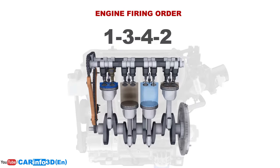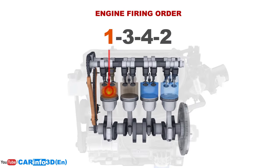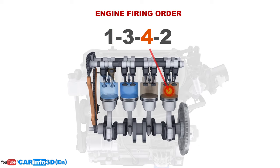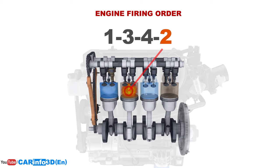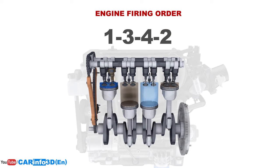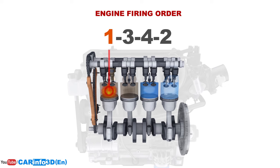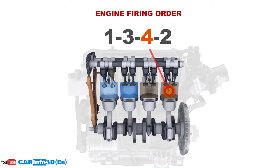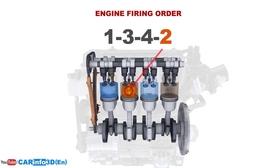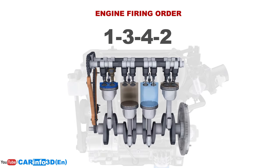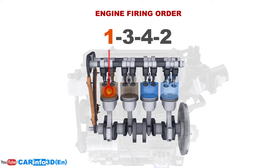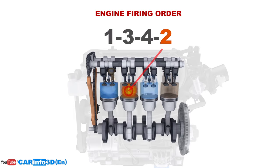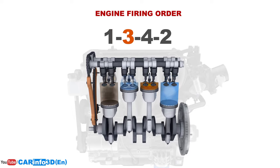The strokes alternate in different engine cylinders in a certain sequence, known as the engine firing order, which is required for more stable engine operation. The firing order for this engine is 1-3-4-2. This means that the power stroke occurs in the first cylinder, then the third, fourth, and finally the second cylinder. The sequence is then repeated.